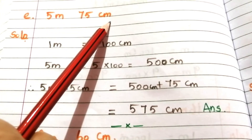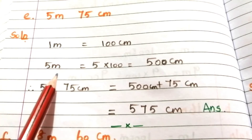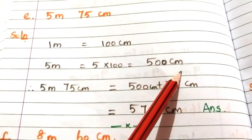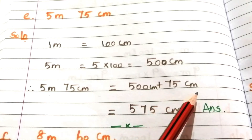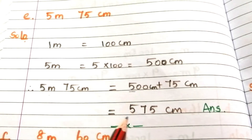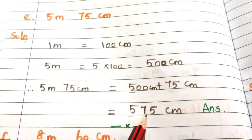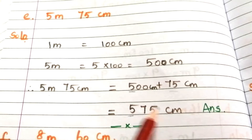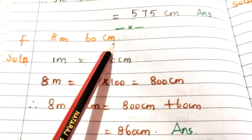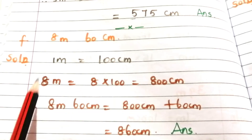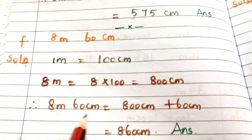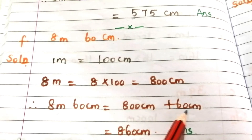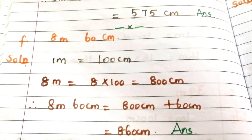Problem E: 5 meters 75 centimeters. We know 1 meter equals 100 centimeters, therefore 5 meters equals 500 centimeters. So 5 meters 75 centimeters equals 500 + 75 = 575 centimeters. Problem F: 8 meters 60 centimeters. 8 meters equals 800 centimeters, so 8 meters 60 centimeters equals 800 + 60 = 860 centimeters.